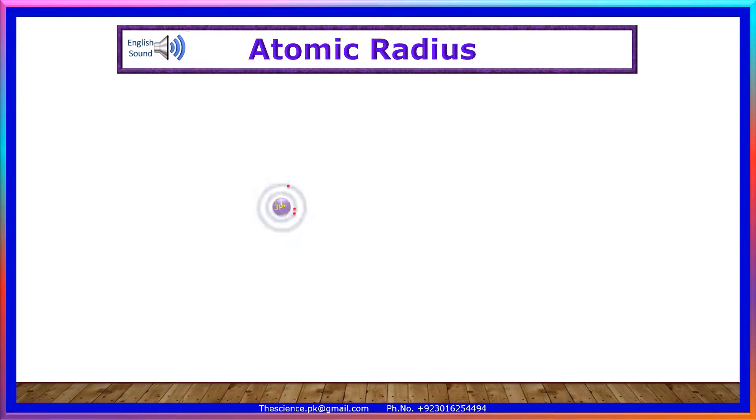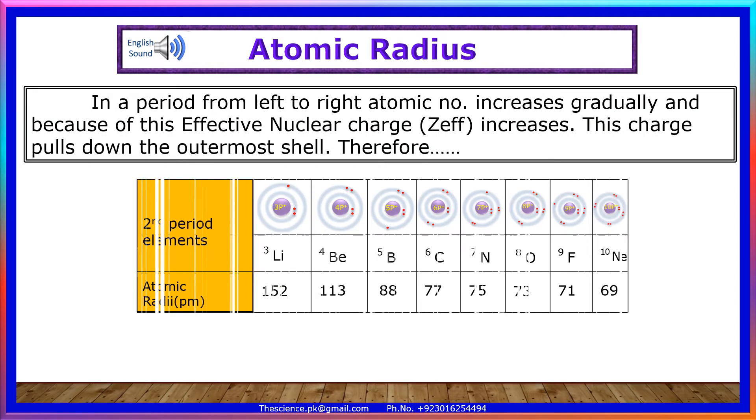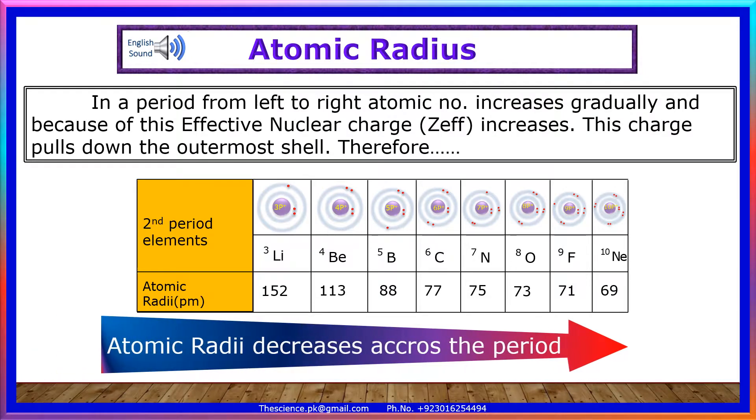Trends of atomic radius. In a period from left to right, atomic number increases gradually and because of this, effective nuclear charge increases. This charge pulls down the outermost shell, therefore atomic radii decreases across the period.